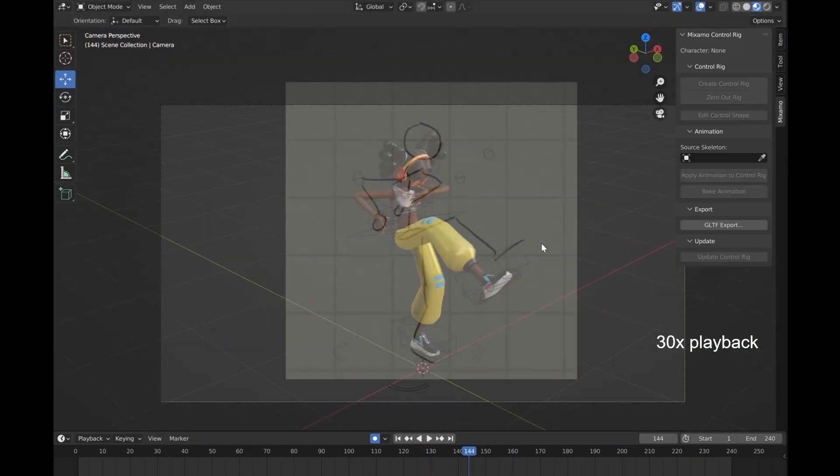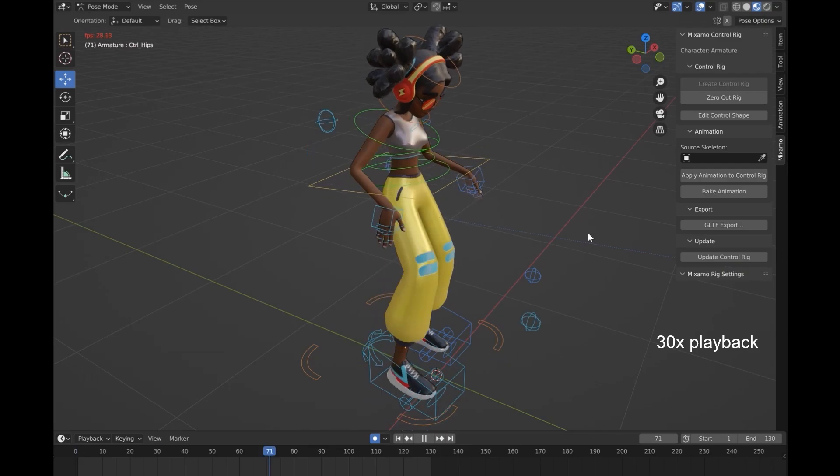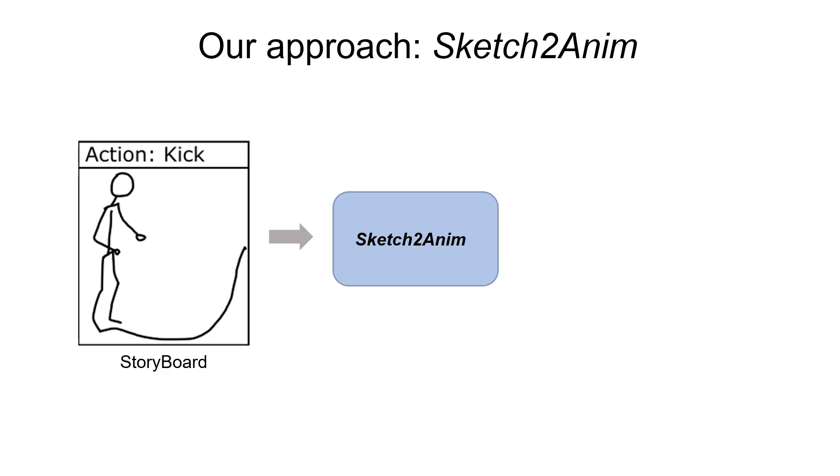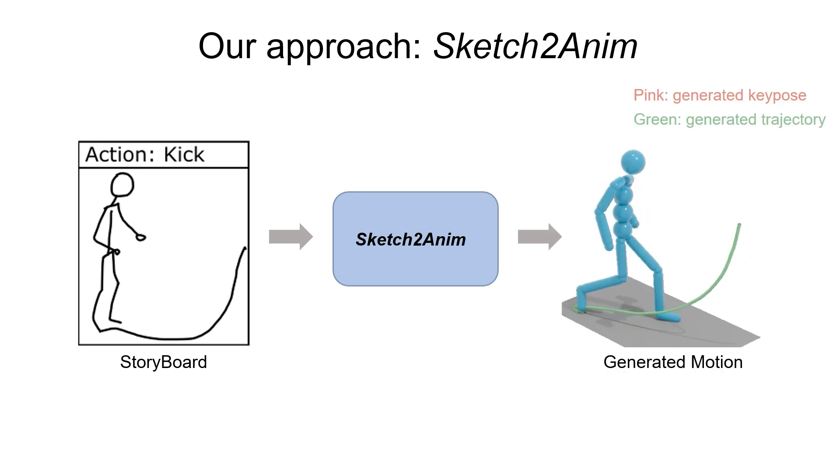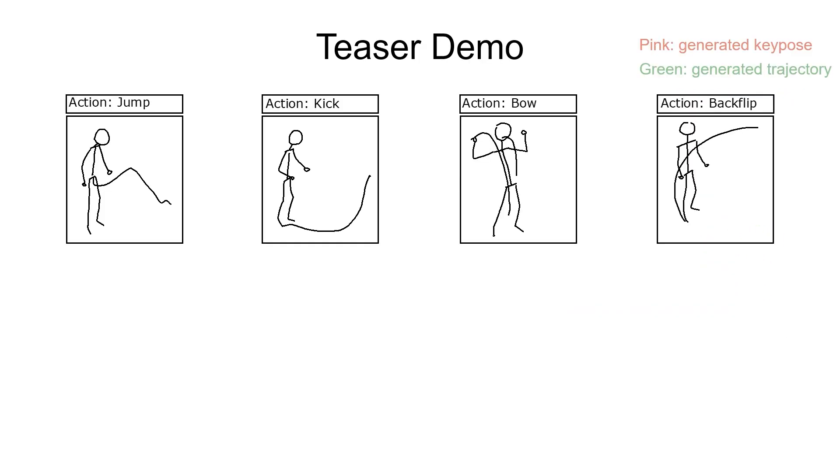Automated methods that translate 2D sketch storyboards into 3D animations are highly demanded. In this work, we propose the first automatic framework, dubbed Sketch2Anim, for directly translating from 2D sketch storyboards to 3D animation. Note that the pink color indicates the generated key pose corresponding to the sketch pose, and the green curve shows the generated trajectory corresponding to the sketch trajectory. We use this color scheme for key pose and trajectory visualization in the paper and in this video.